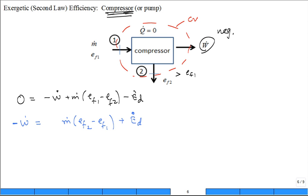Okay, why? It's just algebra. But what is this term? See, W dot's negative. You put a negative in front of it, it's positive. So, this is a positive inflow of exergy with the work.